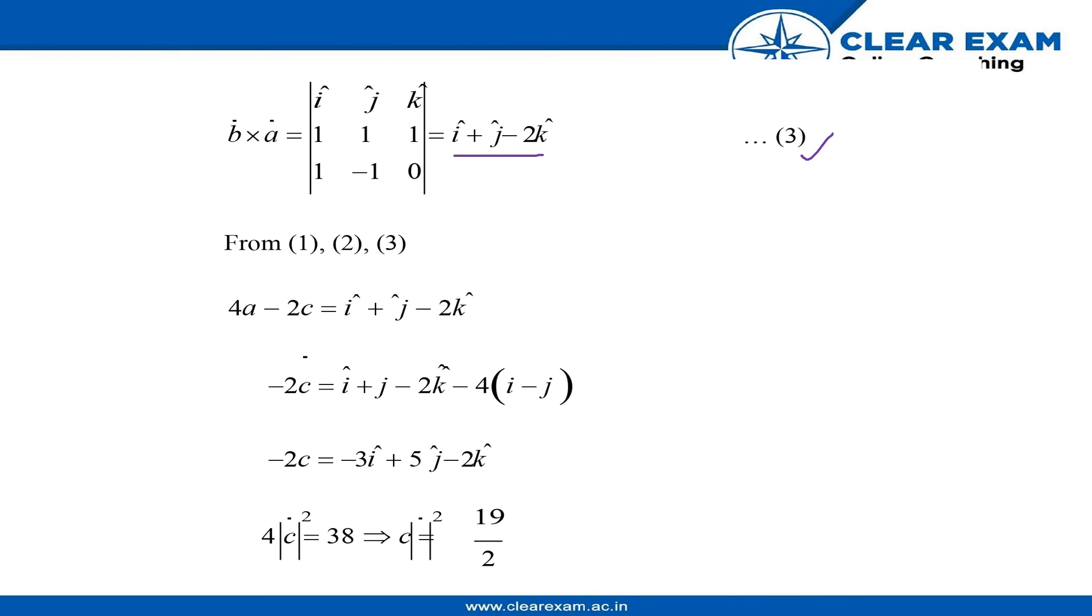From equations one, two, and three, putting all these values and substituting, we get 4a minus 2c equals i plus j minus 2k.